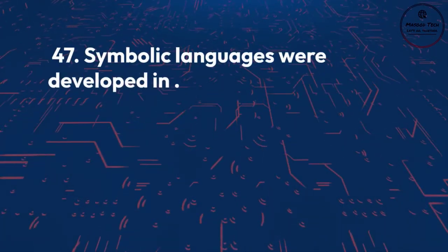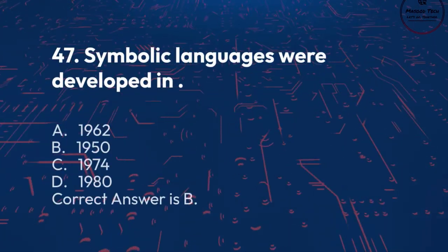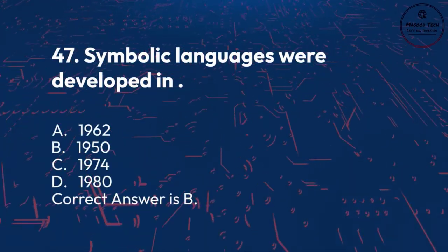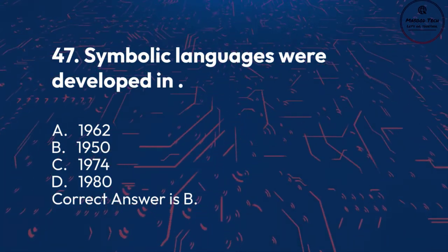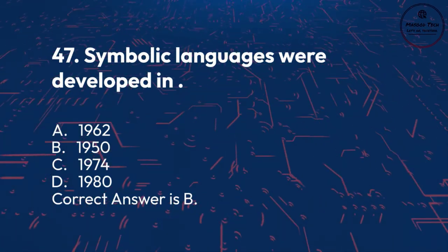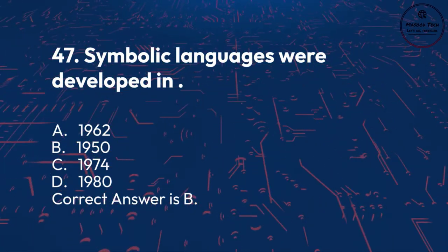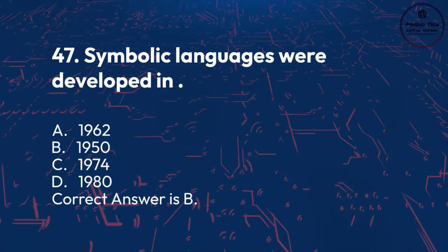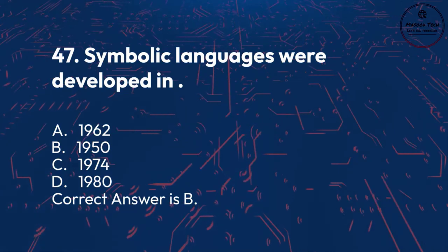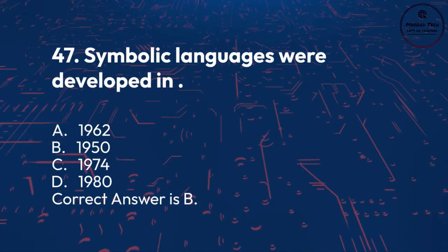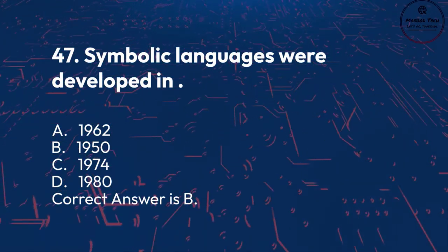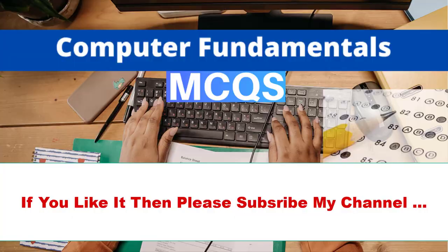Number 47. Symbolic languages were developed in: A. 1962. B. 1950. C. 1974. D. 1980. Correct answer is B.